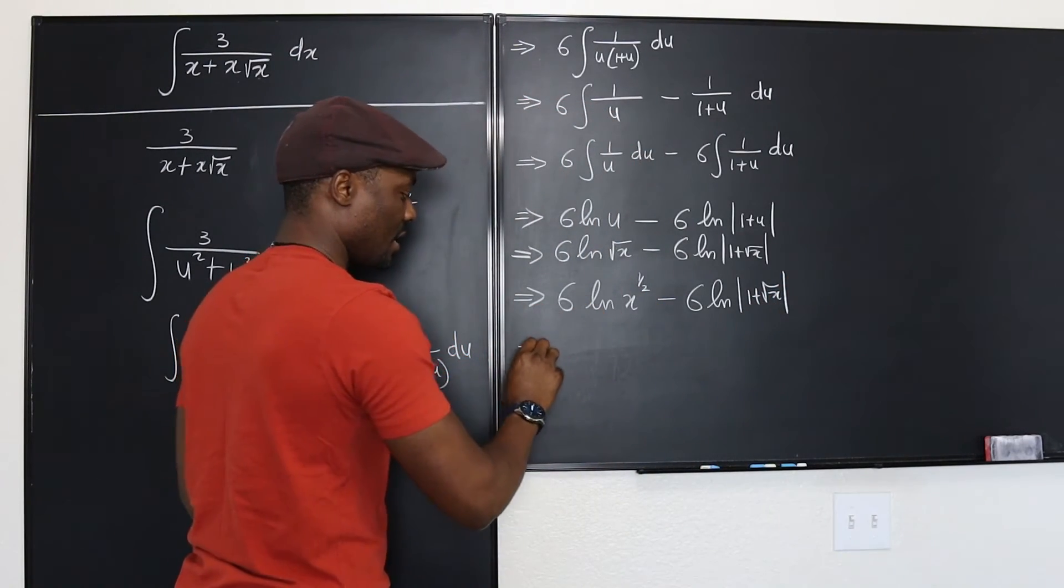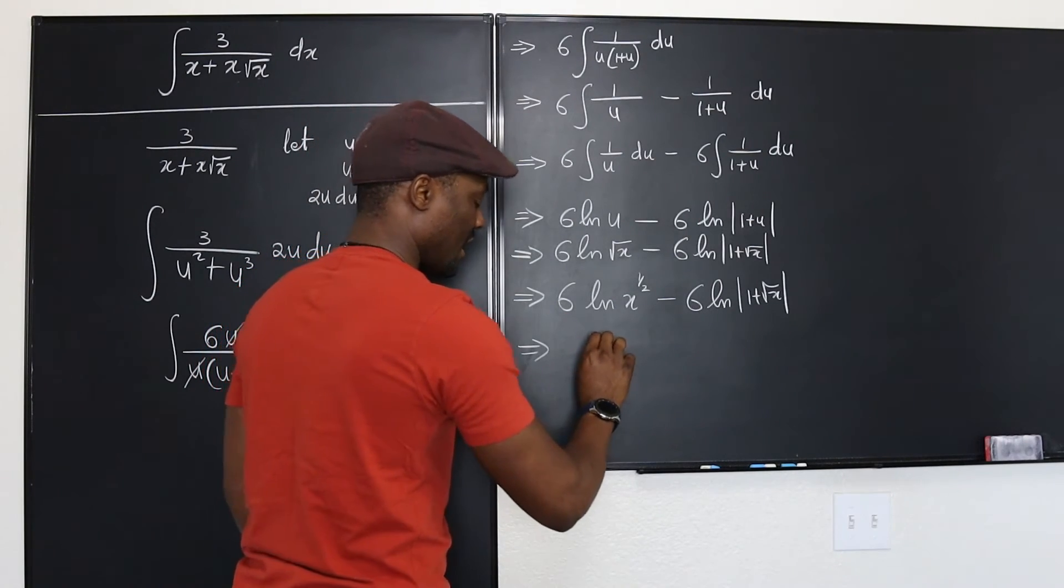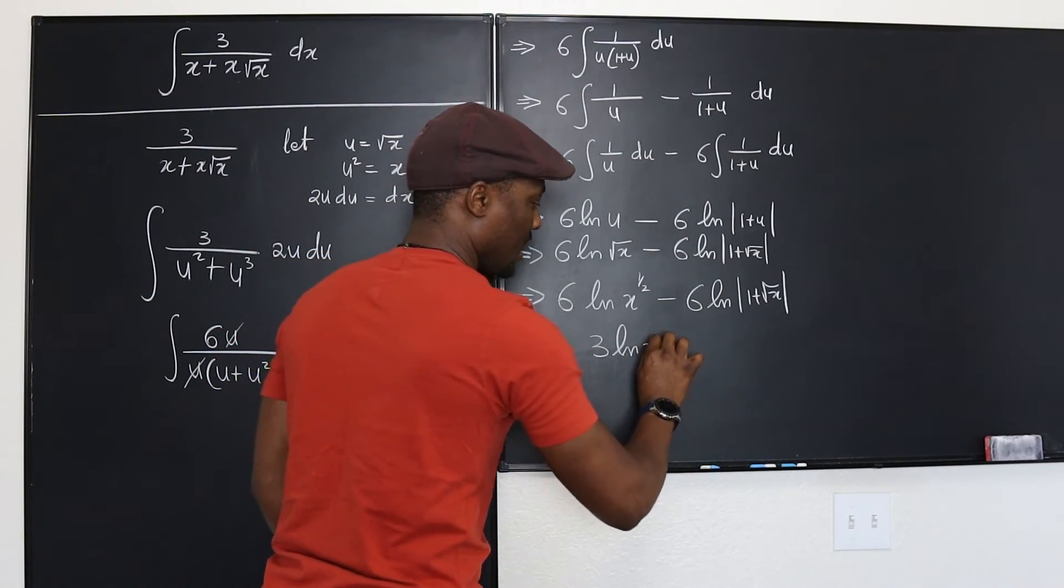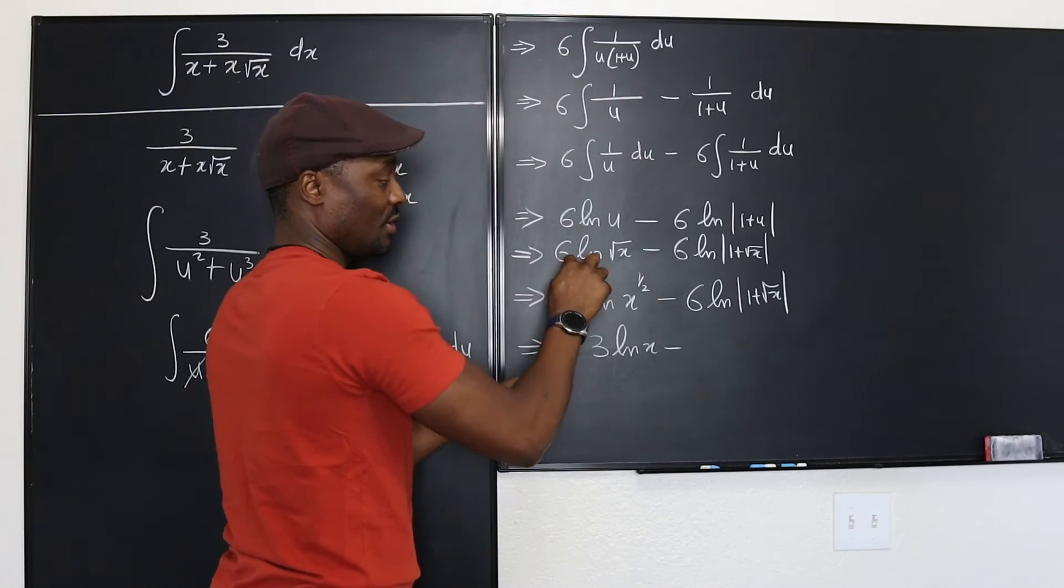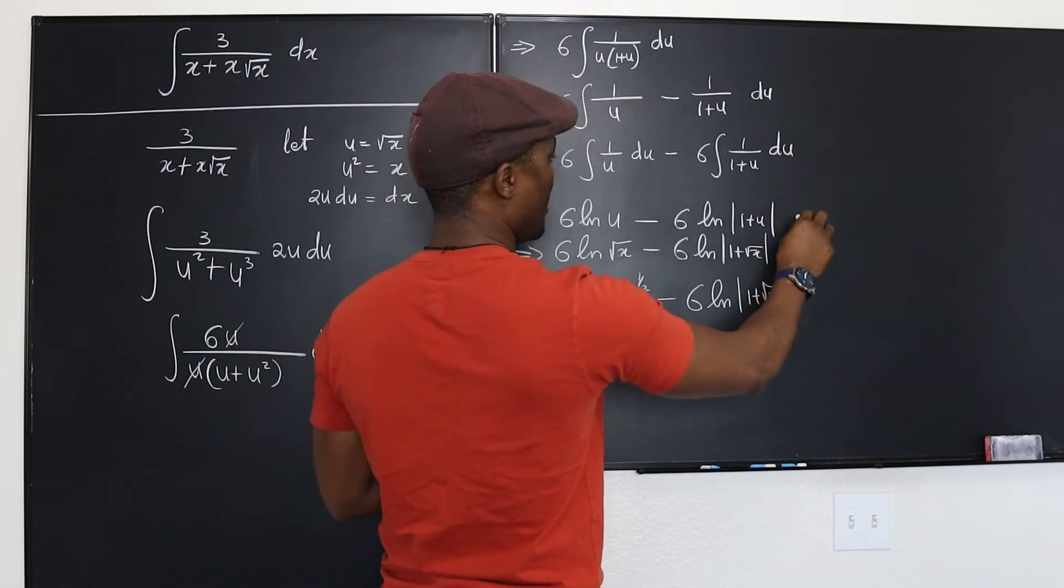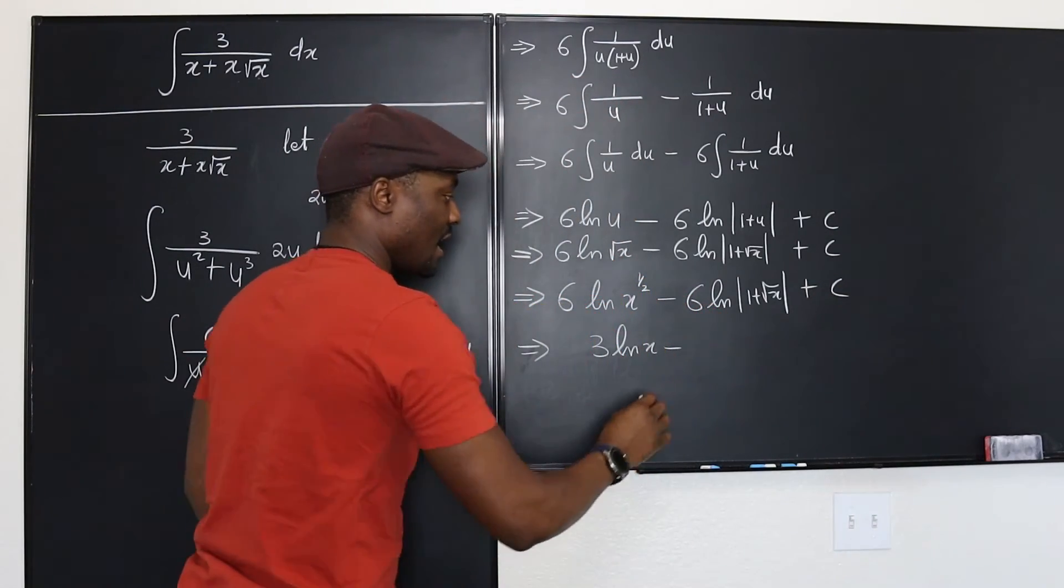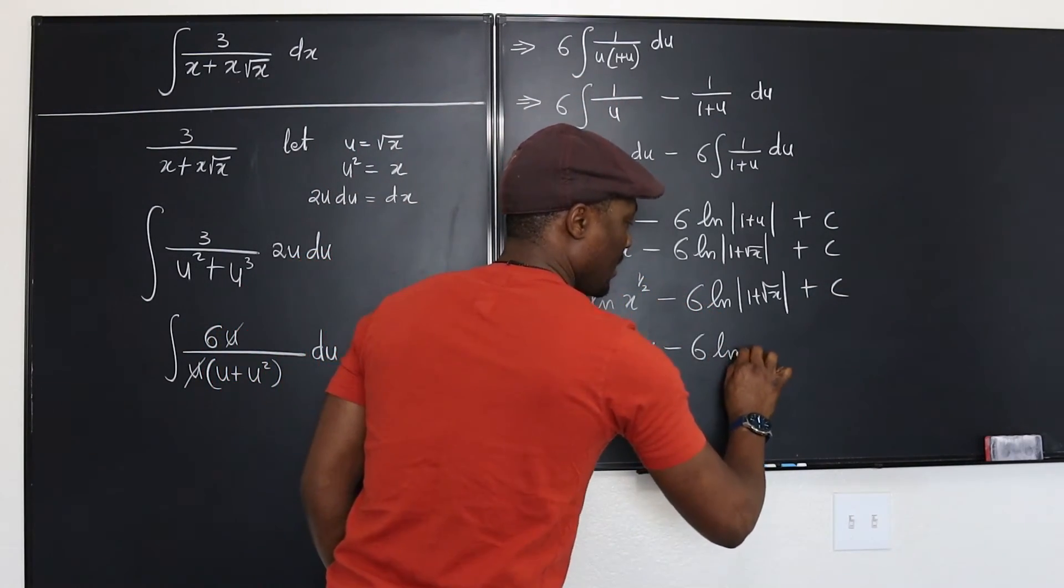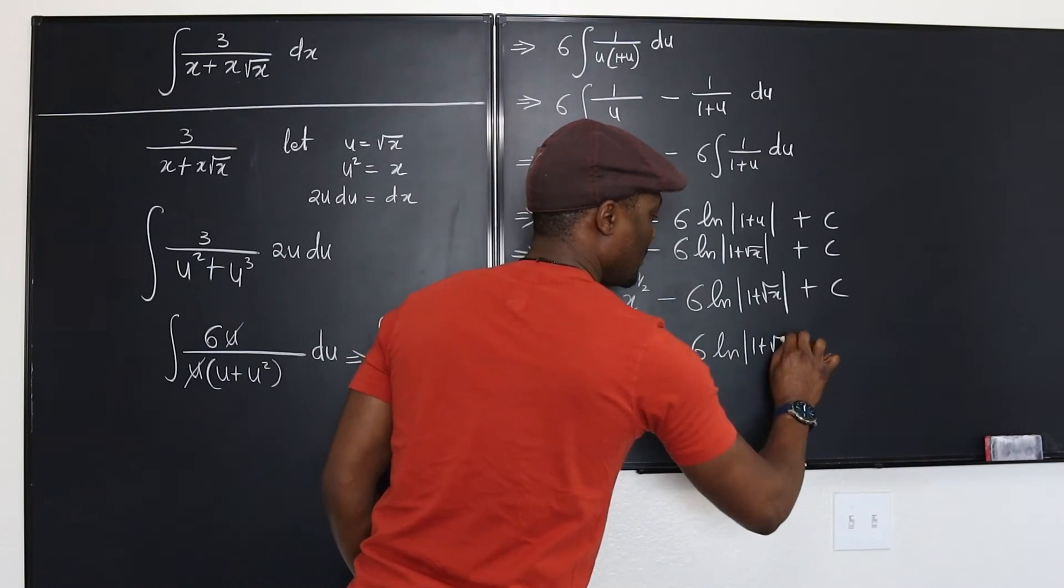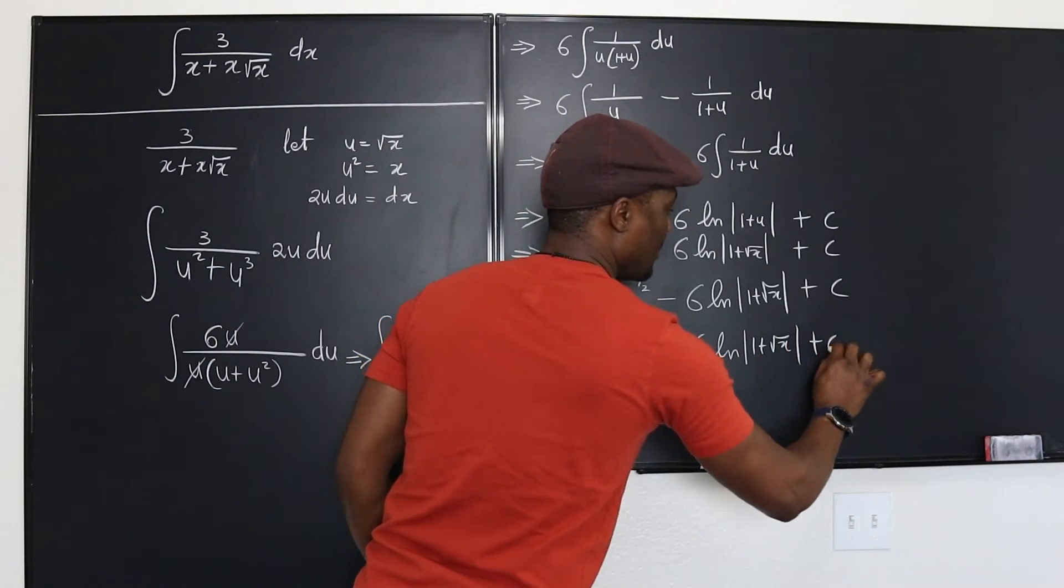This one half goes here and divides 6, that gives you 3 ln x. You don't have to do this, this is good enough as the answer, plus c. I forgot plus c, don't forget that. And 6 ln 1 plus square root of x plus c.